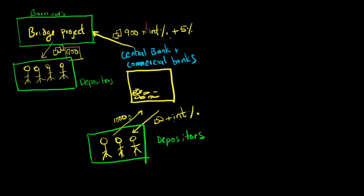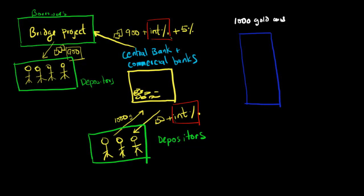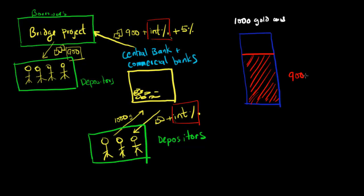In this video, we're going to look at the effect of changing the interest rates. Let's look at things from the point of view of the Bridge Project guy. Let's assume that he is very confident that if he builds the bridge, within a year he'll be able to sell it for 1,000 gold coins. He's also confident that it will only take 900 gold coins to build this bridge, so his expected costs are 900 gold coins.